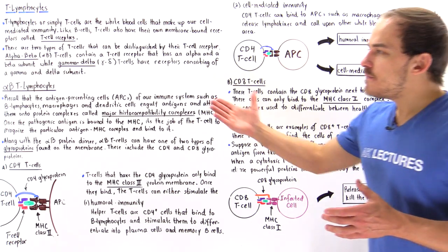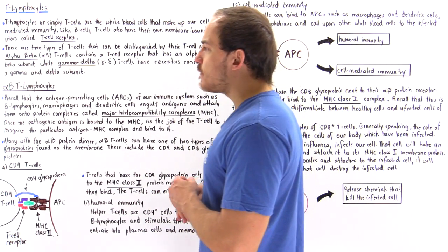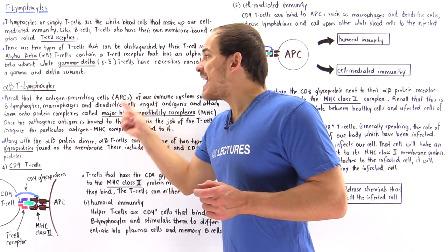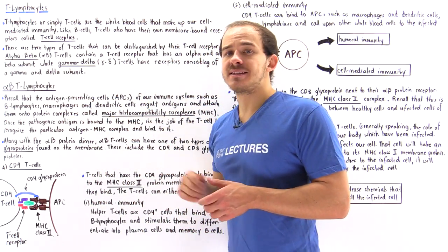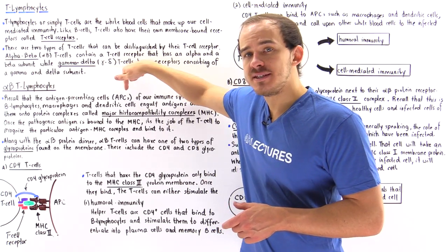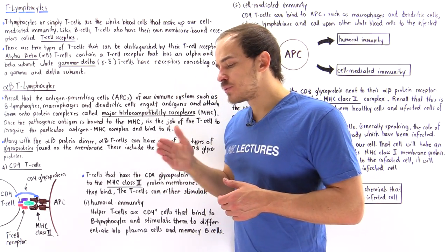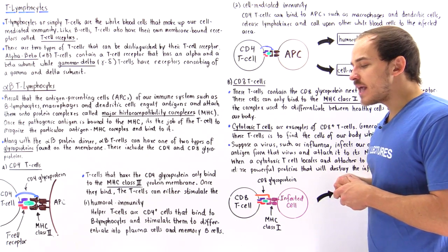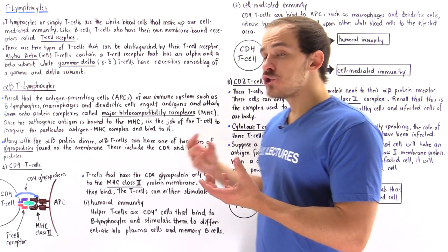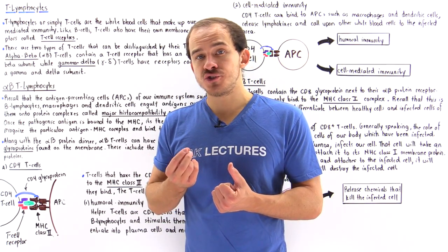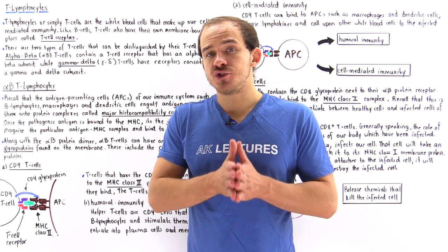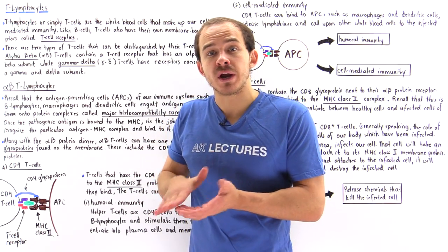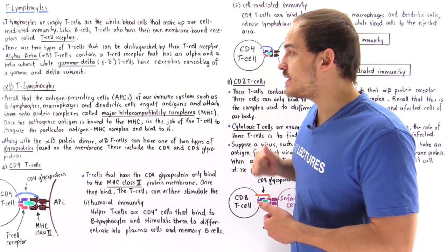Now before we take a look at these alpha-beta T cells, let's recall what an antigen presenting cell is, or an APC. An antigen presenting cell is a type of white blood cell whose function is to engulf our antigens and take those antigens and present them on the membrane of those APCs.